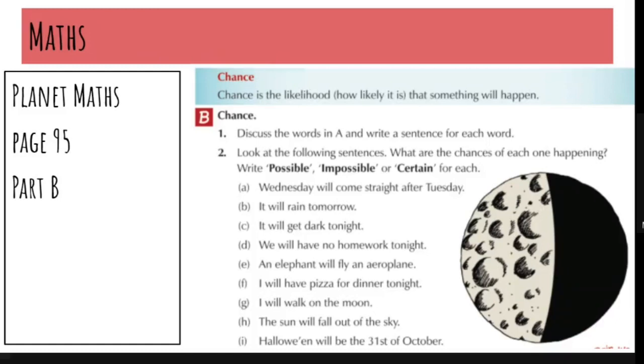So for example, what are the chances that I will win the lotto tonight? If I don't enter the lotto, if I don't buy a lotto ticket, the chance of that happening is impossible. I will not win the lotto. I will never win the lotto if I do not buy a ticket. What are the chances that I will win the lotto tonight if I do buy a ticket? It's possible. I could win. If I buy a ticket, I could win the lotto, so it's possible.